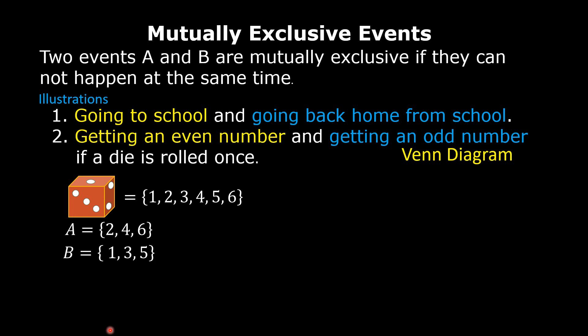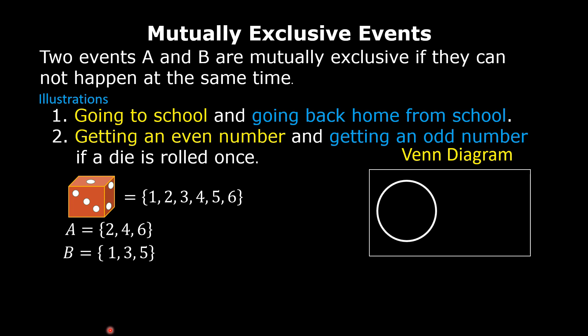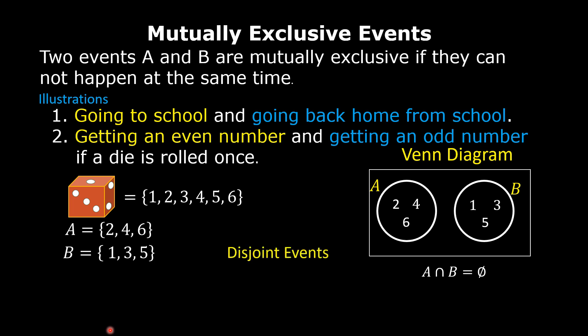Using a Venn diagram, let us say circle A is for event A. The possible outcomes are two, four, and six. Circle B is for event B. The possible outcomes are one, three, and five. We can see that A intersection B is an empty set. Mutually exclusive events are also called disjoint events.